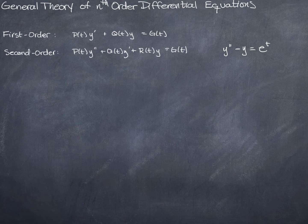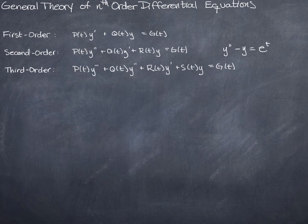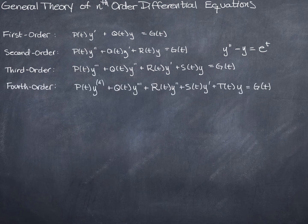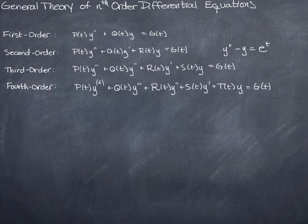A third order and a fourth order might look like this. Notice that in each case, we have p(t) as our function in front of our highest derivative, and then we go along the alphabet: p, q, r, s — as many as we need. The right-hand side is always g(t), but it doesn't really matter what we call these functions. g(t) could be 0, it could be e to the t, it could be sine of t, or any number of things.